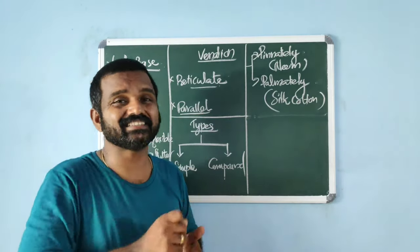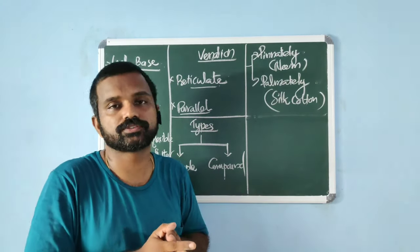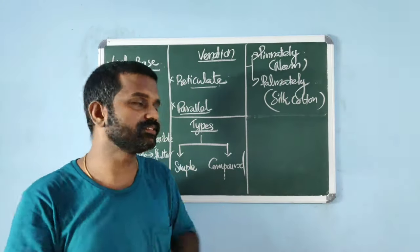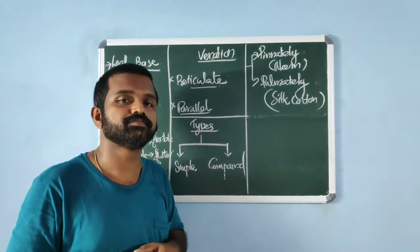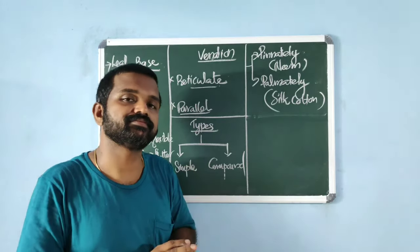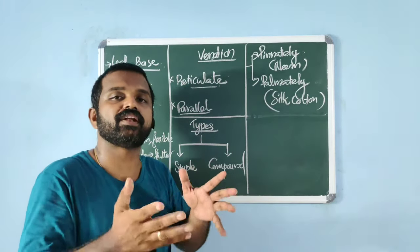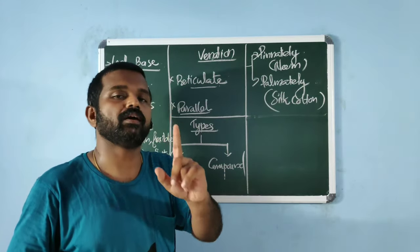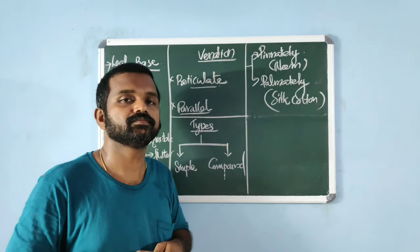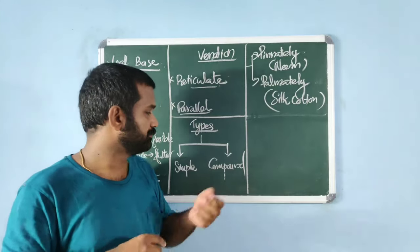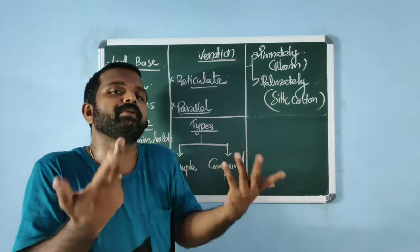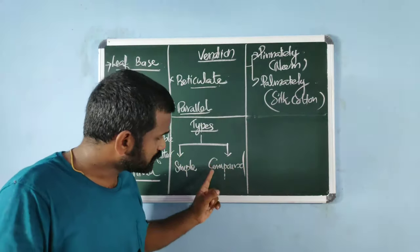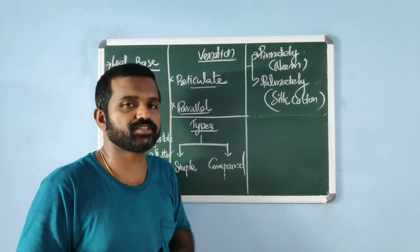Based on whether incisions touch the midrib or not, leaves are of two types. Simple leaf: incisions do not touch the midrib, so there is only one lamina — typical example is the mango leaf. Compound leaf: incisions touch the midrib and the lamina is divided into many leaflets. Compound leaves are further categorized into pinnately compound and palmately compound.